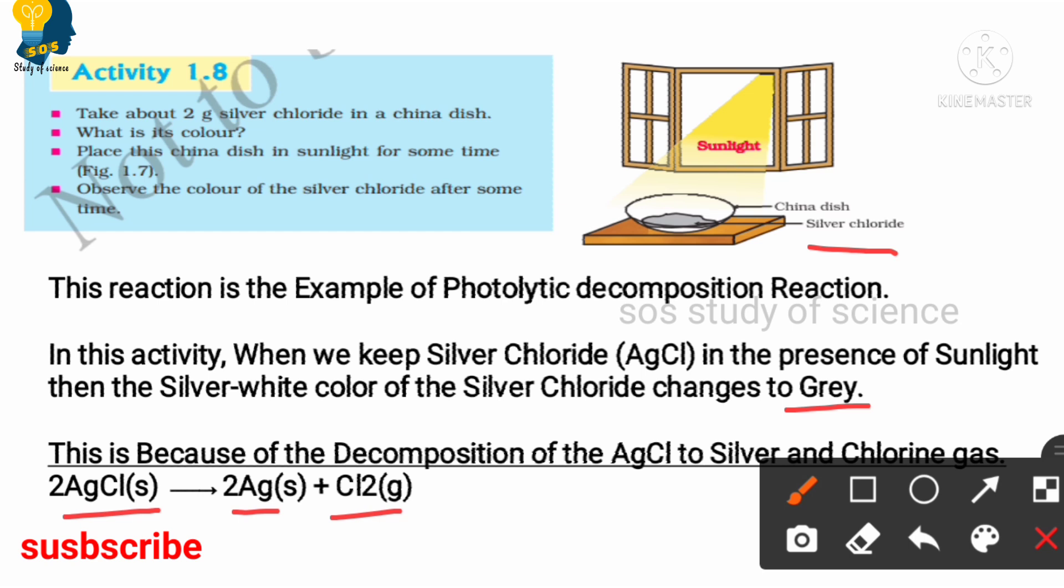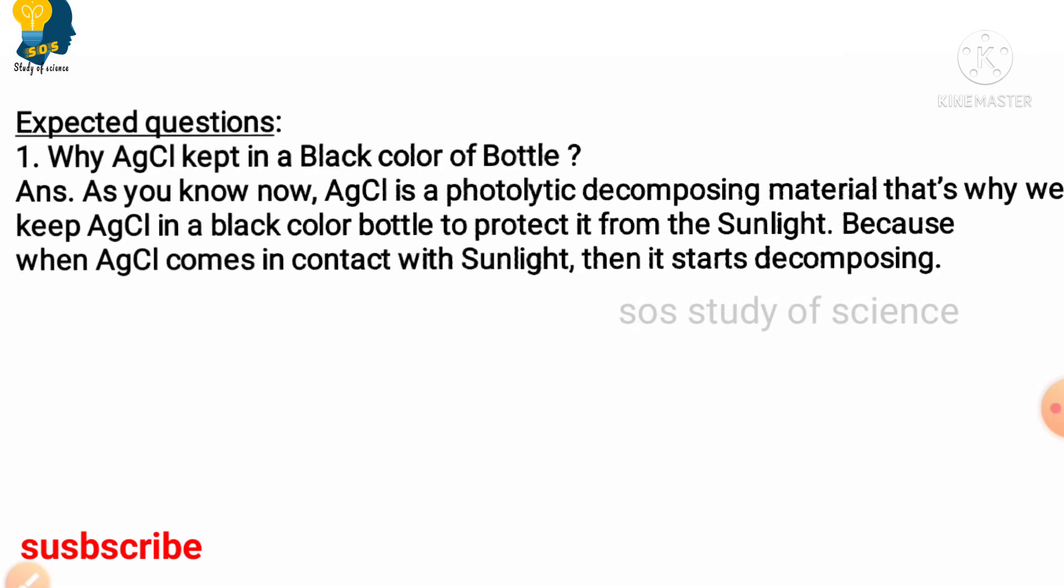When we look at the first question, why is silver chloride kept in a black color bottle? As you all know, silver chloride is a photolytic decomposing material. So if we keep it in the transparent bottle, it comes in contact with the sunlight and it will undergo decomposition reaction. So to protect from the sunlight, we are keeping the silver chloride in the dark color bottles or the black color bottles, so that we can avoid decomposition which has been taking place in the presence of sunlight.